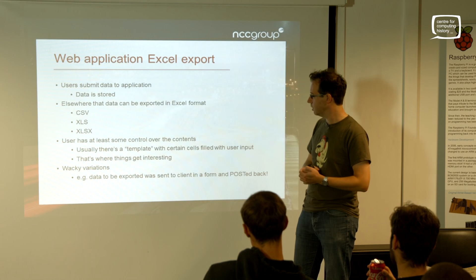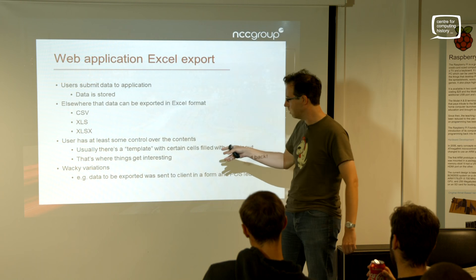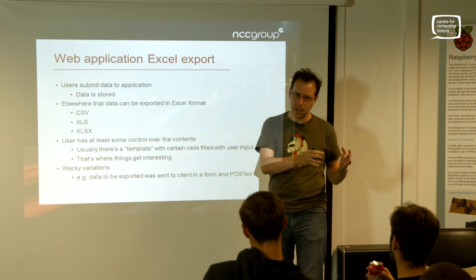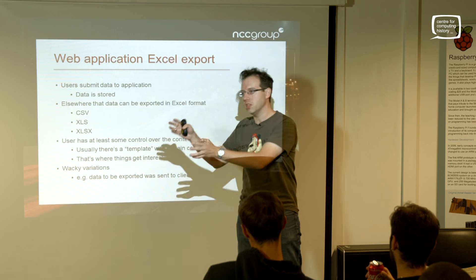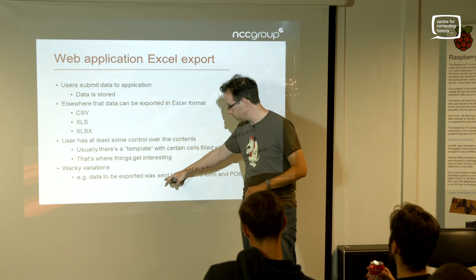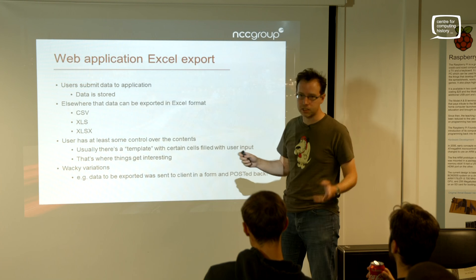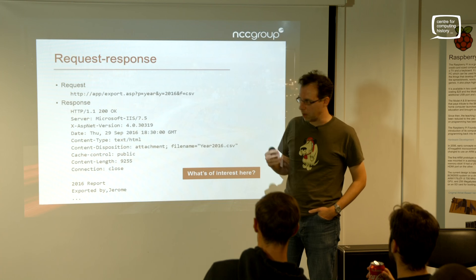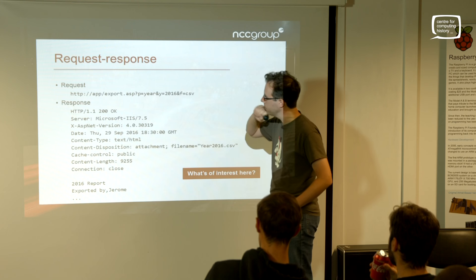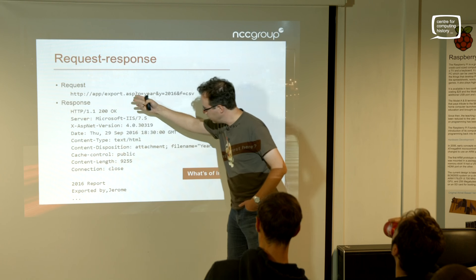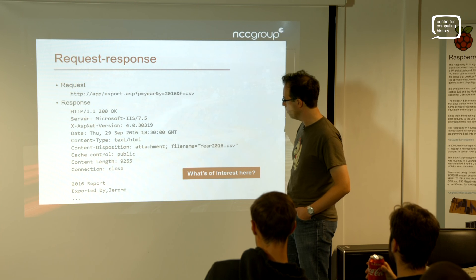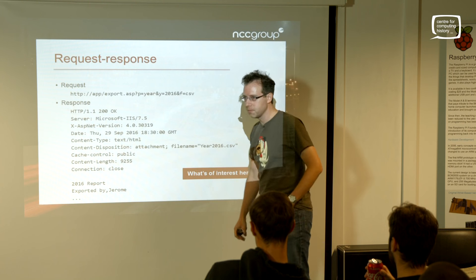Now and again you get some really weird variations - I've seen ones where the export function sends data back to the client and then it gets posted back up to the application as a CSV. There are all sorts of weird things going on and they can be vulnerable to other things. But we'll take the general case. As an example, imagine you're sending a request to an export page and you get back some headers and your CSV file starting there.